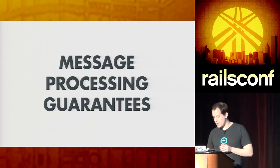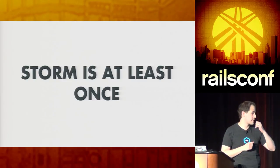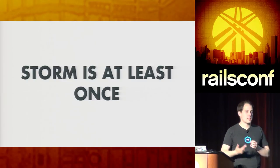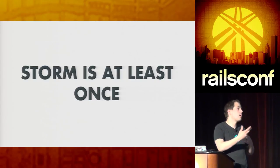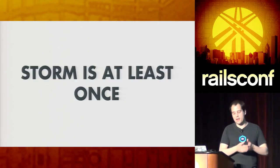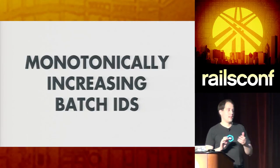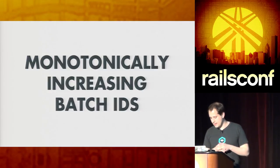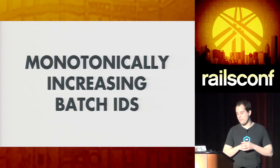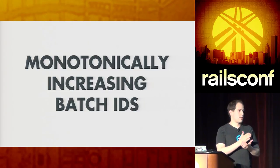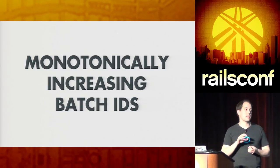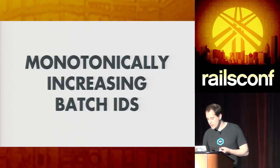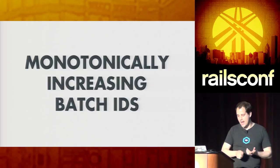Storm is at-least-once, but what we can try to do is handle the case where we get messages that show up multiple times. Can we handle that? Can we maybe not redo the processing? Can we try to ensure we end up as close as possible to processing exactly once? The way Storm tries to approach this is pretty nice. We have batches — everything's processed in batches. What Storm guarantees is that the next batch will not reach completion until the previous one is fully committed. And it gives monotonically increasing batch IDs.